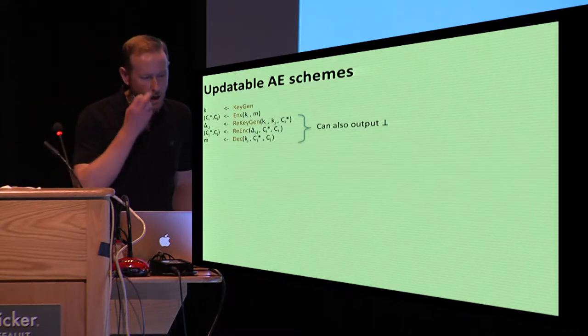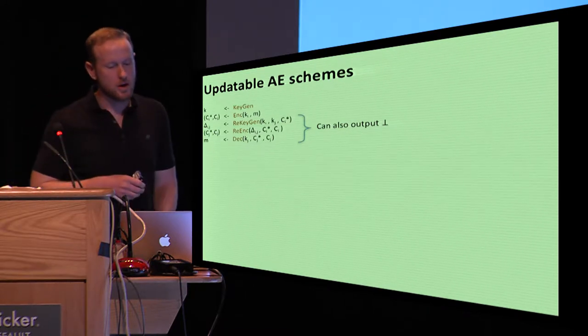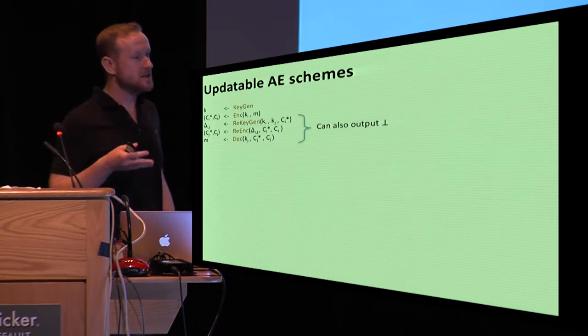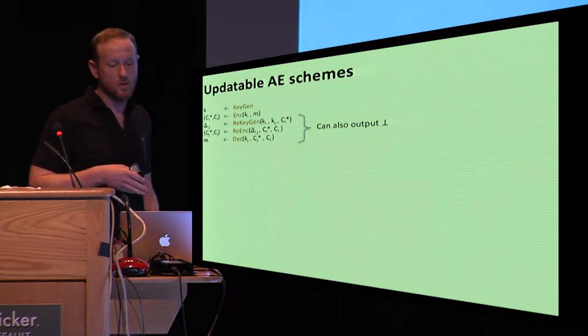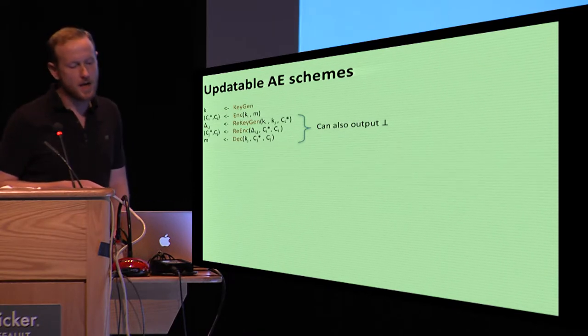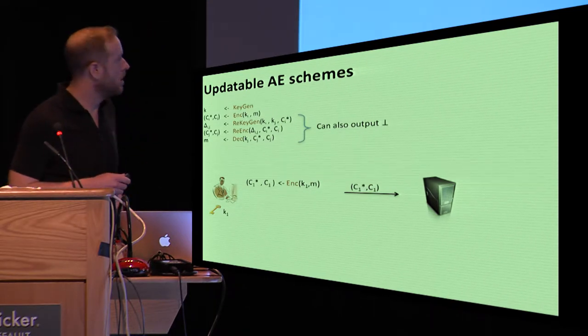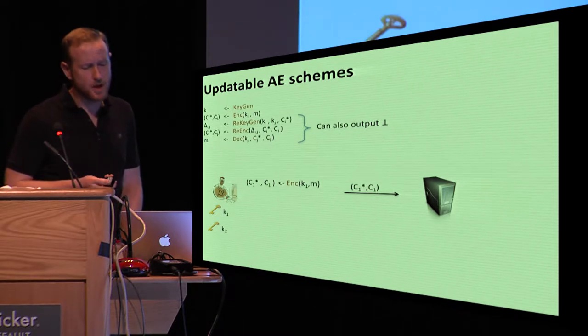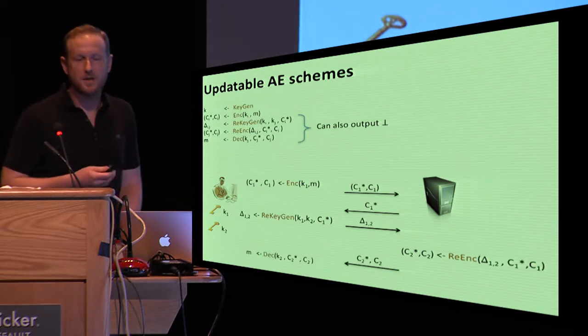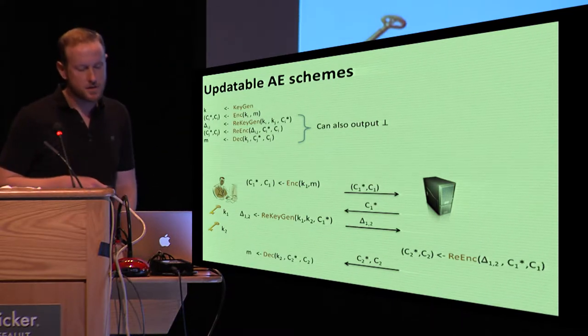So to fix some notation, an updatable AE scheme combines the basic three algorithms that we're used to—key generation, encryption, decryption—with a re-key generation algorithm that takes two keys, ki, kj, and a ciphertext header ci-star, and then generates an update token that can then be in turn used with a re-encryption algorithm to rotate the key underlying a ciphertext. This gives us the right syntax semantics, and I should say this is building off the BLMR formalization as well. You can encrypt something, you can generate a re-key token using it, use re-encryption, and then successfully decrypt the resulting ciphertext under the key to which it was rotated. We have formalized correctness conditions for all this in the paper.